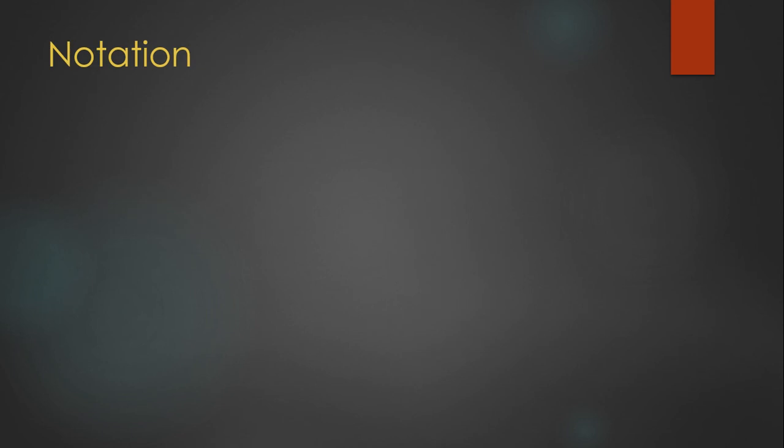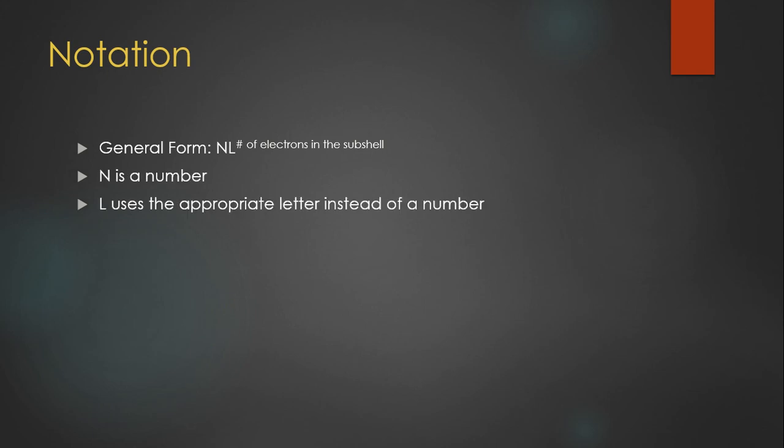So to tell others about how many electrons are in a certain orbital, we have a general form of notation, which is going to be n, L, with a superscript of the number of electrons in that shell. So n is a number, but L, as I said earlier, instead of being a number, it's going to be the letter, which is going to be s, p, d, or f.